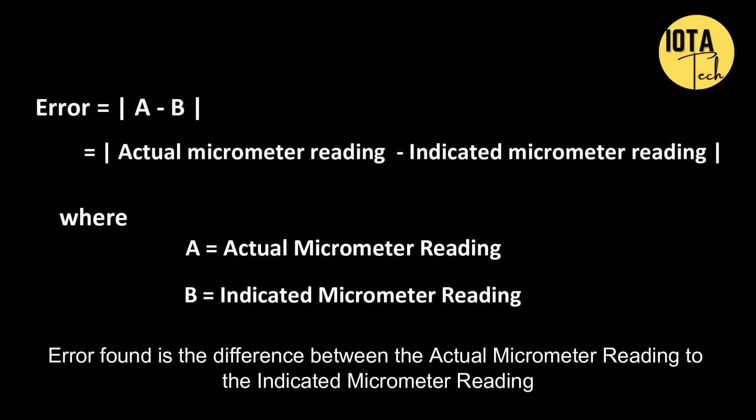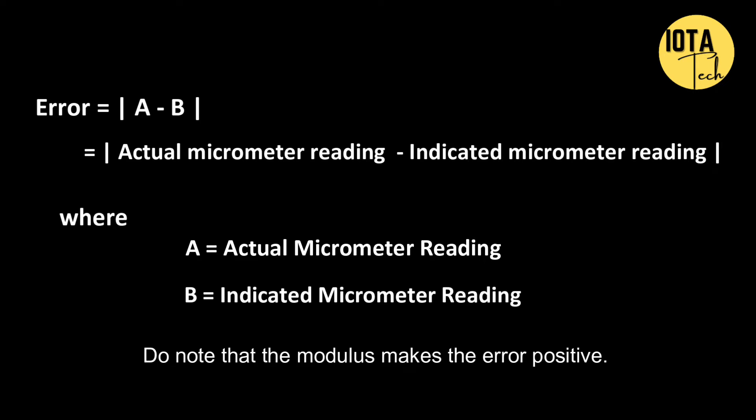The error is the difference between the actual micrometer reading and the indicated micrometer reading, where A is the actual micrometer reading and B is the indicated micrometer reading. Note that the modulus in the error formula makes the value of the error positive.